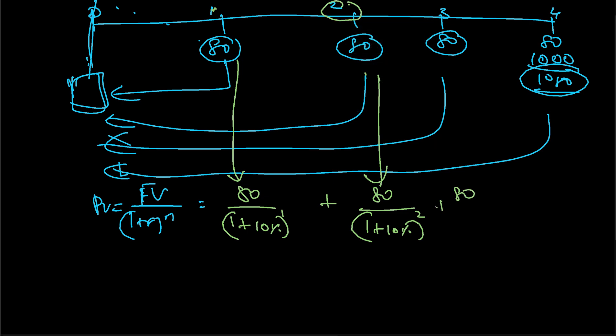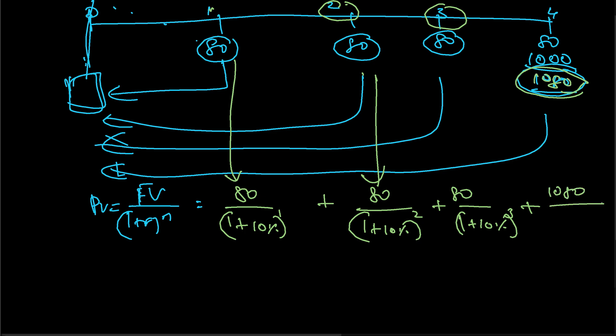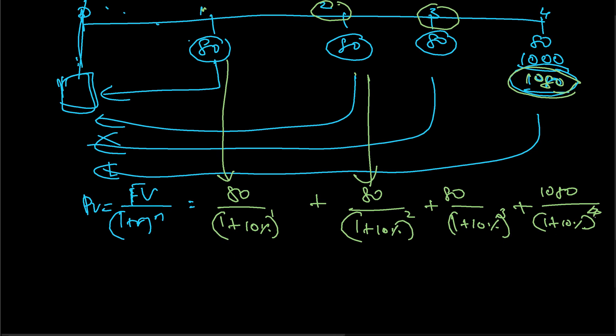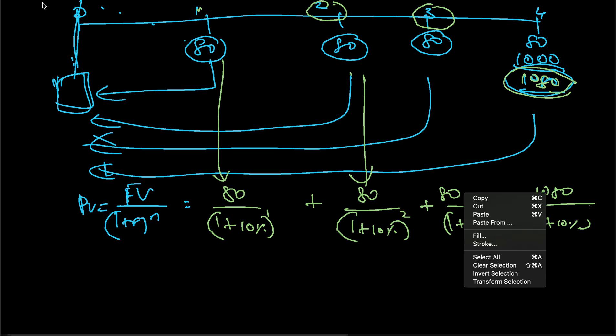Third one: 80 divided by (1 + 10%) to the power 3. For the fourth one, we have to keep in mind that we are getting the principal as well, so 1080 total cash flow. So 1080 divided by (1 + 10%) to the power 4.